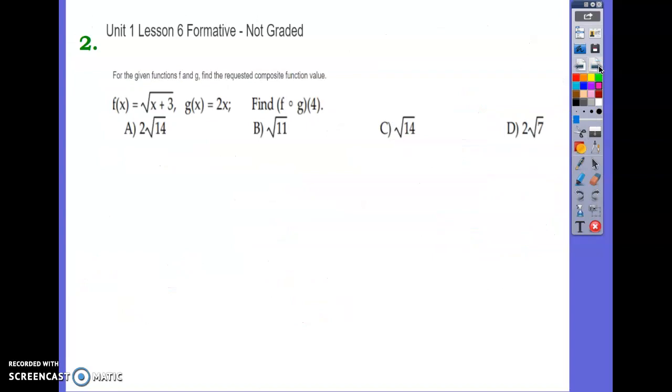All right. Number two. Given functions f and g, find the requested composite function value. So we're asked to find f of g of four, which is the same as f of g of four. So we are substituting in four into g of x first. So let's see. What's g of four? g of four is two times four, right? Which is eight.